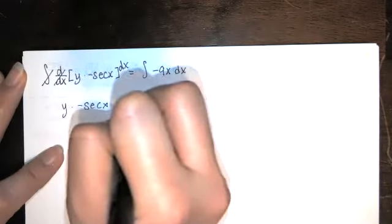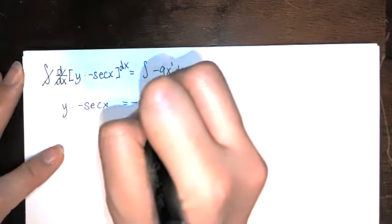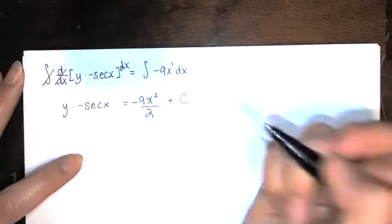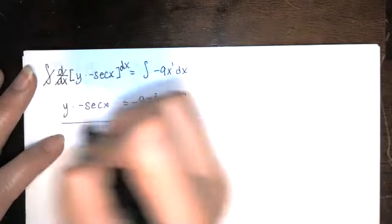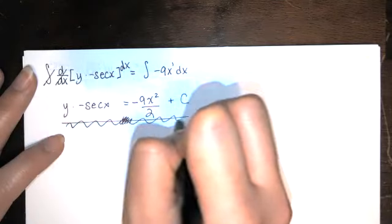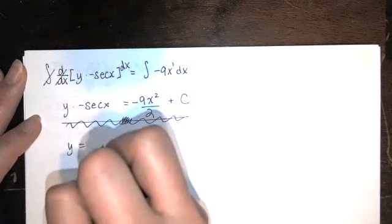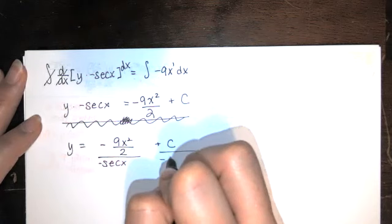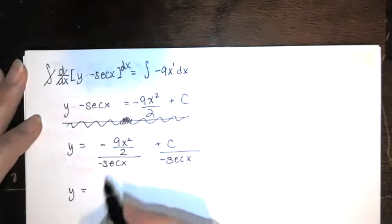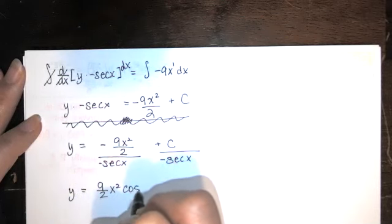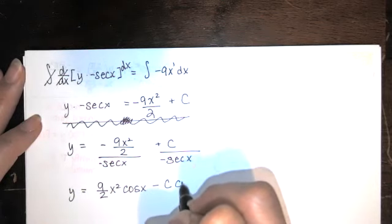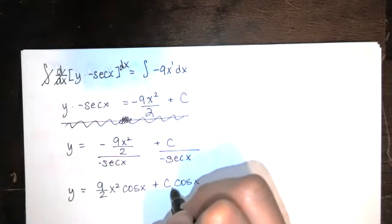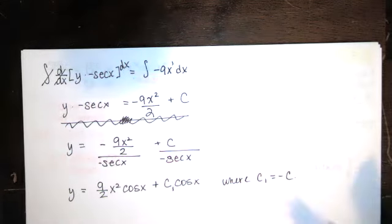To remove the derivative, we antidifferentiate both sides. The left side gives −y·sec(x). On the right, using the power rule on −9x: the antiderivative is −9x²/2 + c. We then divide both sides by −sec(x). Since 1/sec(x) = cos(x), we get y = (9/2)x²cos(x) + c·cos(x). Replacing −c with a new constant c₁, the general solution is y = (9/2)x²cos(x) + c₁cos(x).